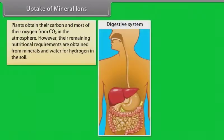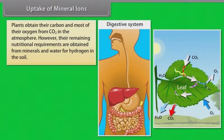Uptake of mineral ions. Friends, as we all know that plants do not have teeth and digestive organs like us. They obtain their carbon and most of their oxygen from CO2 in the atmosphere. However, their remaining nutritional requirements are obtained from minerals and water for hydrogen in the soil.